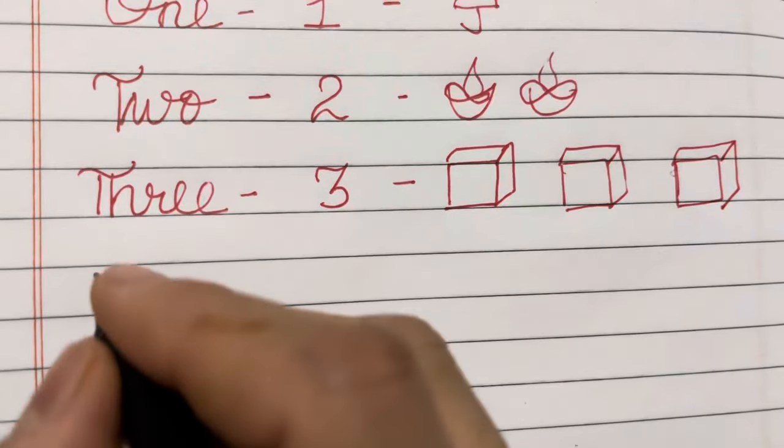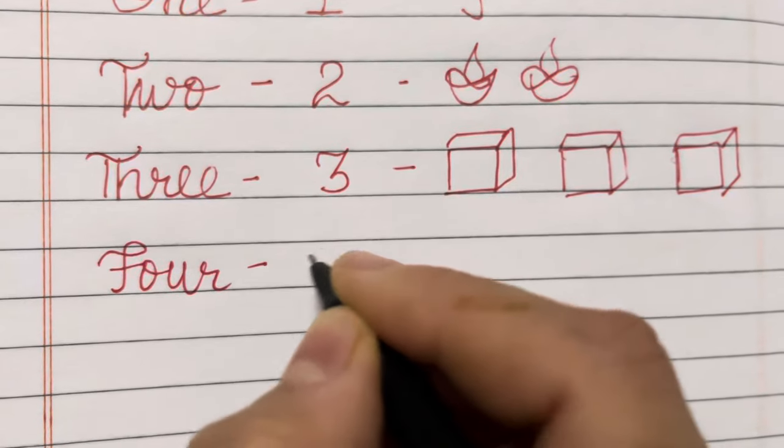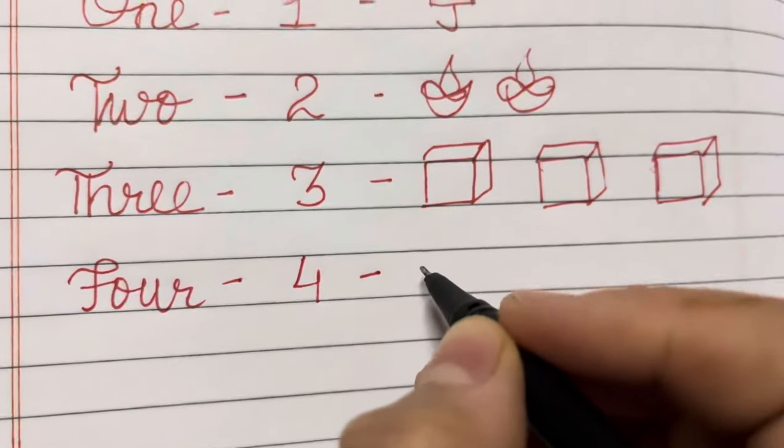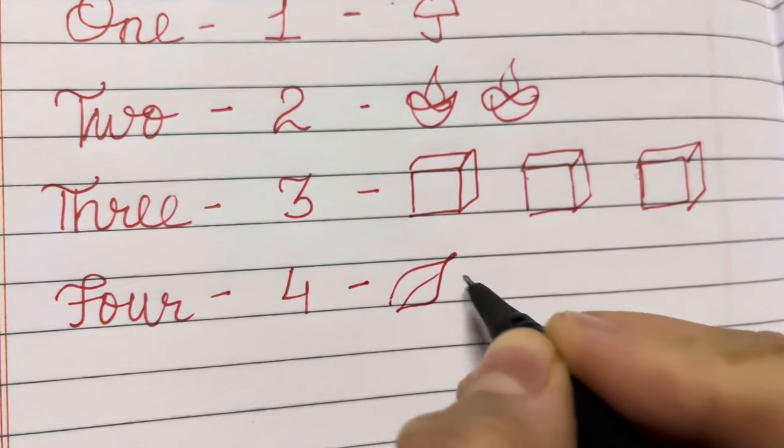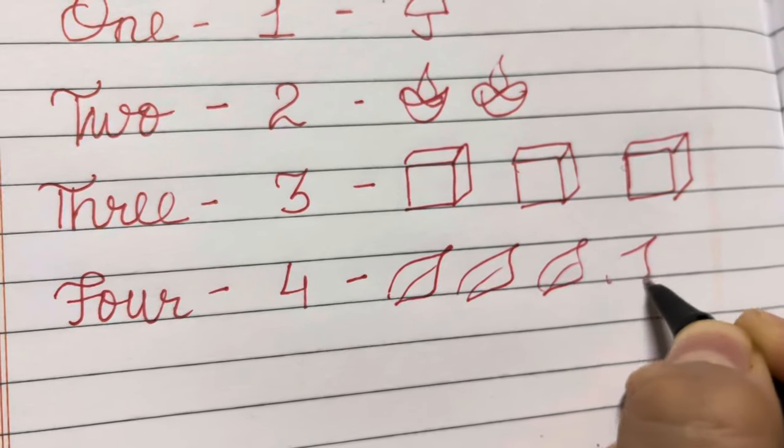Four. F, O, U, R. Four. Four leaves. One, two, three, four.